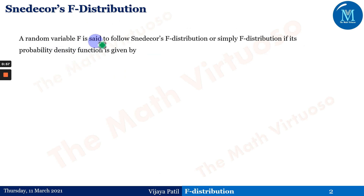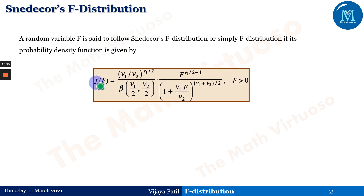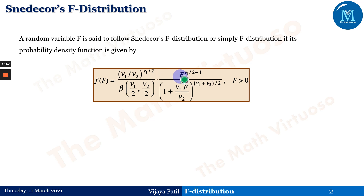A random variable capital F is said to follow Snedecor's F-distribution, or simply the F-distribution, if its probability density function is given by f(F) equals (ν₁/ν₂)^(ν₁/2) divided by Beta(ν₁/2, ν₂/2), multiplied by F^(ν₁/2 − 1), divided by (1 + ν₁F/ν₂)^((ν₁+ν₂)/2), where F is greater than 0. Here ν₁ and ν₂ are the lowercase Greek letters representing the degrees of freedom.